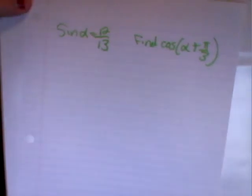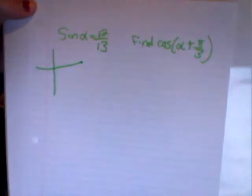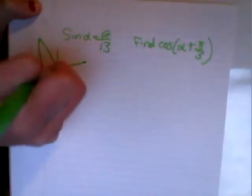To start off, we're going to make a triangle to find the remaining things that we need. And since it's between pi over 2 and pi, it's going to be in the second quadrant.